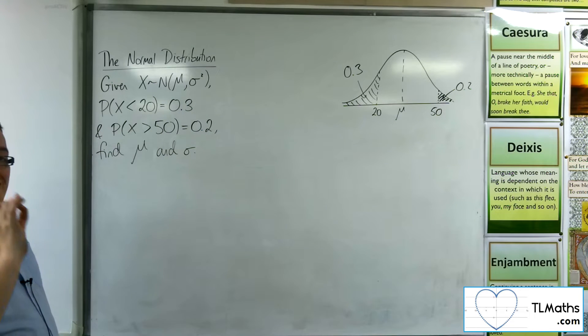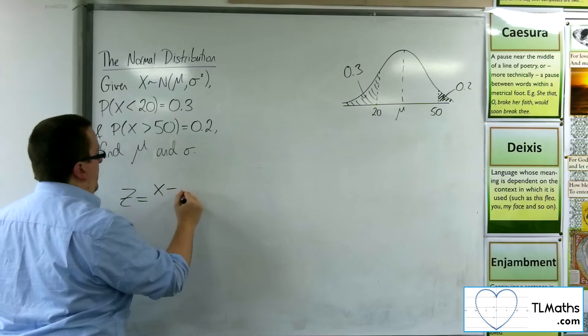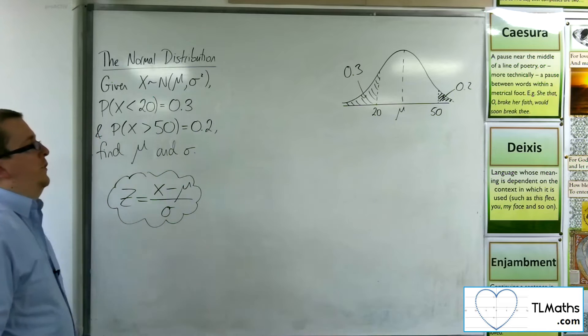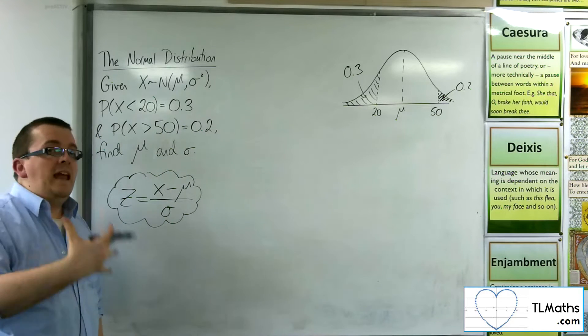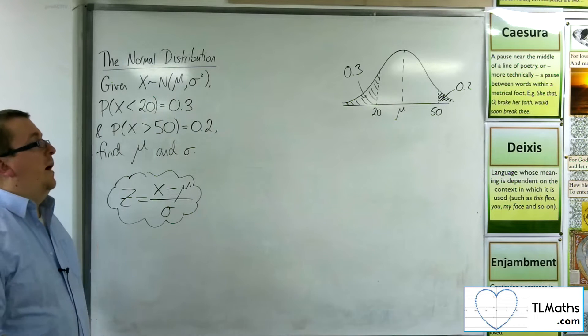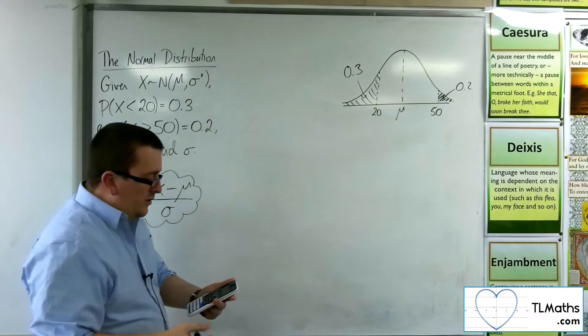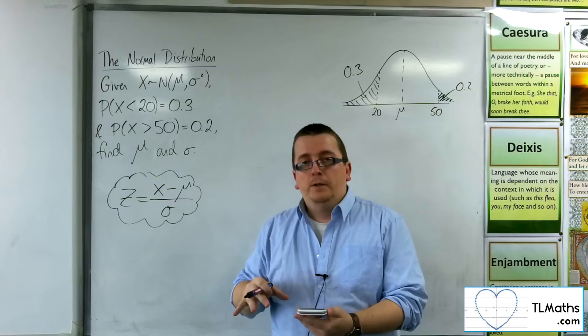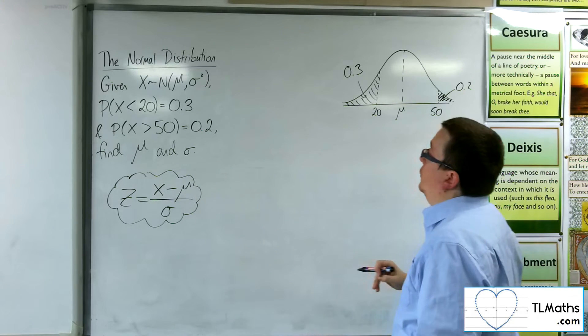Now, for this, we need to have the z equals x minus μ over σ formula ready. So the z value that we find is going to be the inverse norm here. But because we don't know the mean and the standard deviation, we can't directly go to the inverse normal and just type in our mean and standard deviation and the area. So we need to work from the standard normal and utilize this equation.